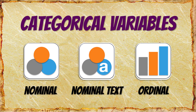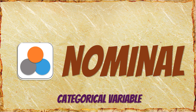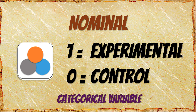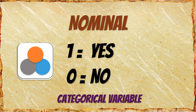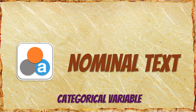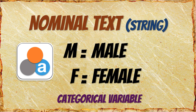We have three types of categorical variables in JASP. The icon with the three balls is a nominal variable. These are categorical variables in which we use numbers to stand for groups, such as using one and zero to stand for experimental and control groups, or yes and no, or whether a patient has diabetes or not. A second type of categorical variable is called a nominal text variable. This type is also recognizable by its three balls, but with a small letter A on the blue ball. The only difference is that nominal text variables have been entered as text — for example, gender entered as M and F. SPSS calls these string variables.